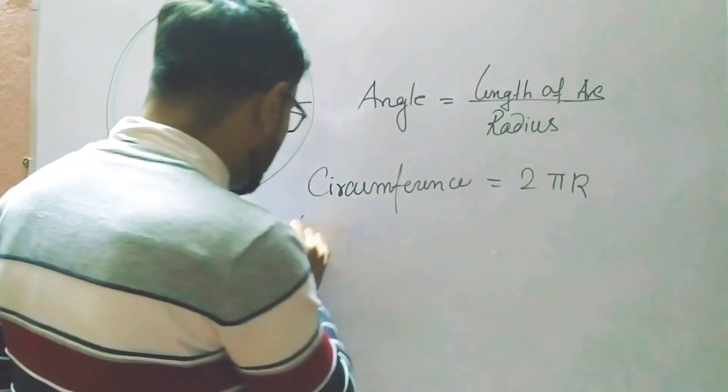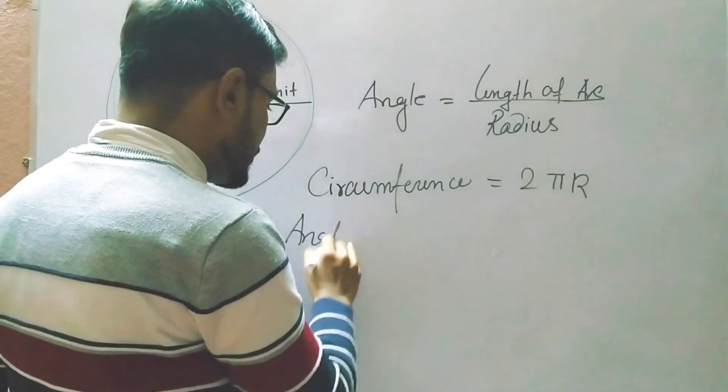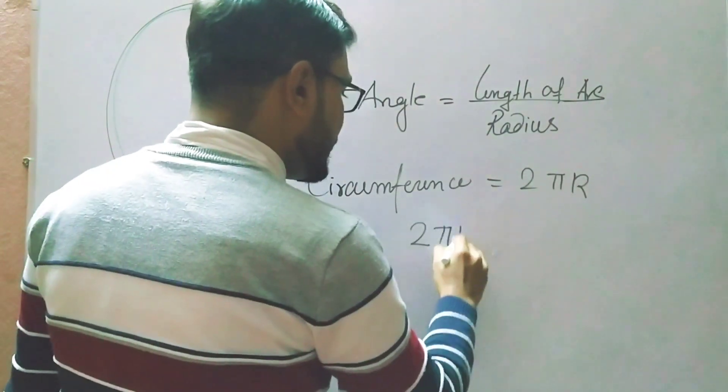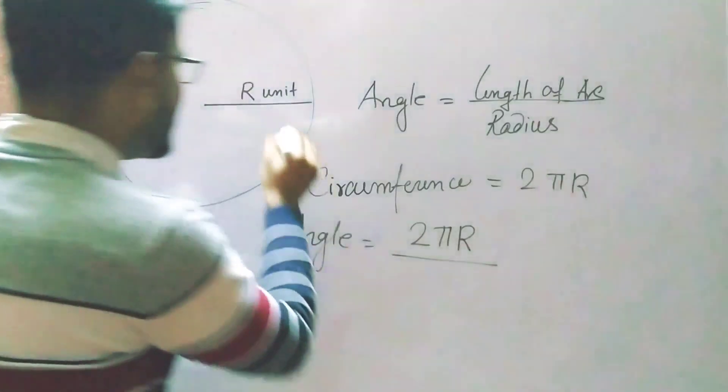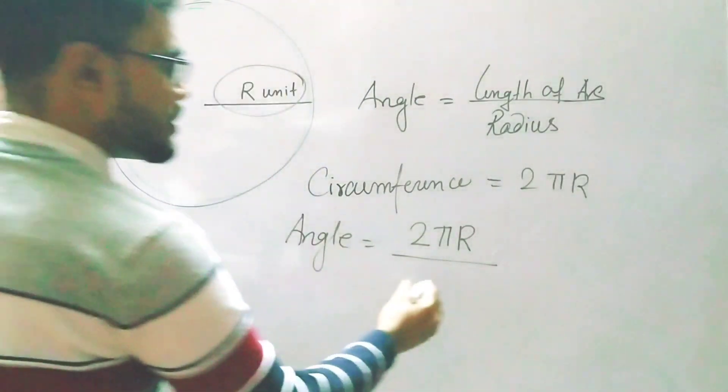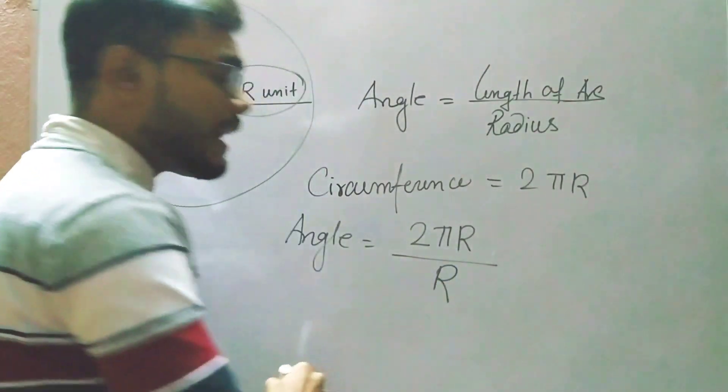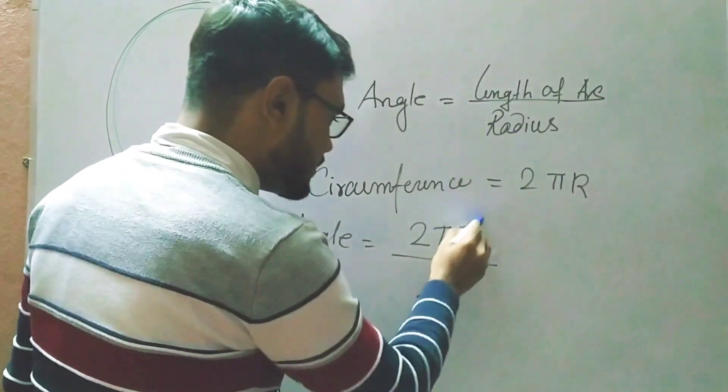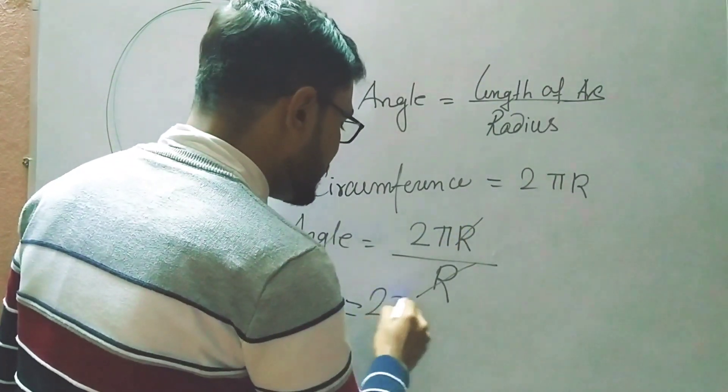That means angle equals 2πr divided by r. I have taken the radius as r, so here r and r get cancelled out, and it becomes 2π.